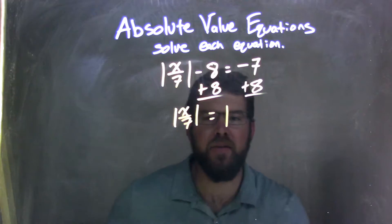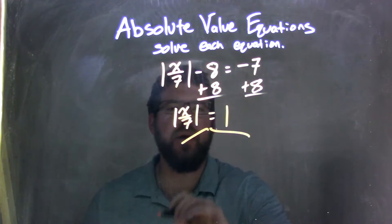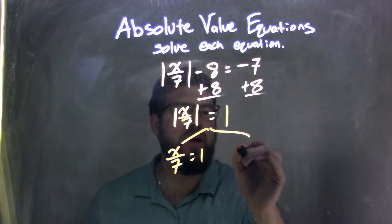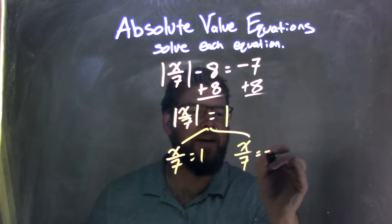From there, since the absolute value is isolated, I can break this apart into two equations, leaving me with x over 7 equals a positive 1, and x over 7 equals a negative 1.